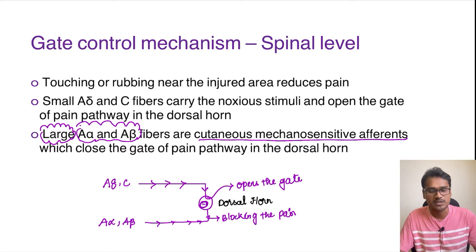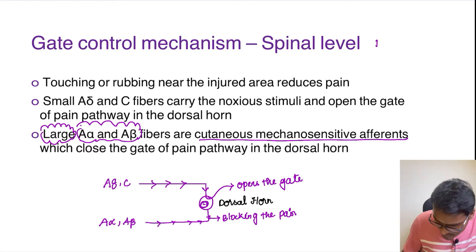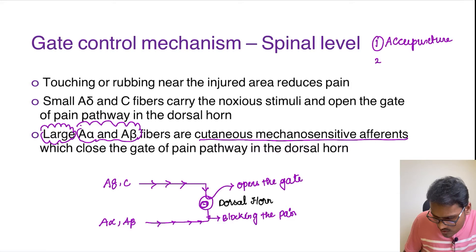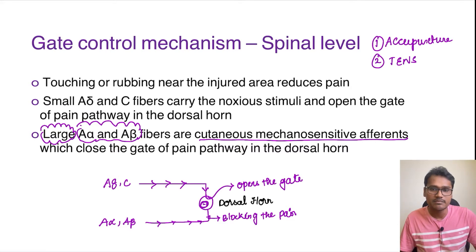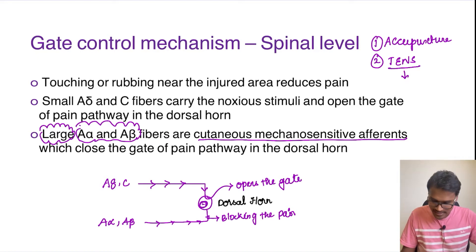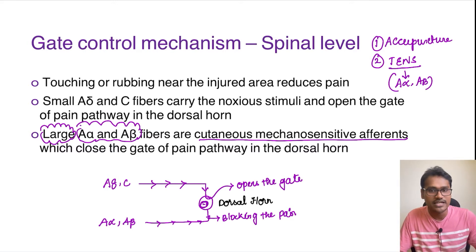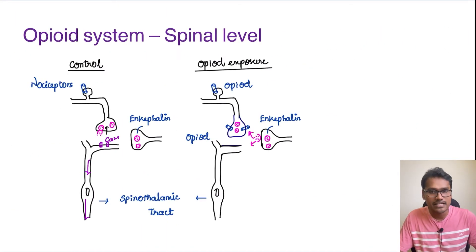This mechanism forms the basis of two important phenomena. One is acupuncture — in acupuncture they stimulate different regions of the body to reduce the pain sensation. Another one is TENS, which stands for Transcutaneous Electrical Nerve Stimulation. In TENS, the nerve fibers stimulated are A-alpha and A-beta, and as and when they are stimulated, they block the pain transmission mechanism.